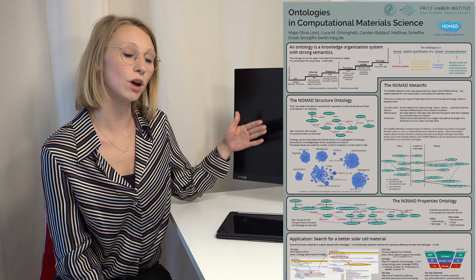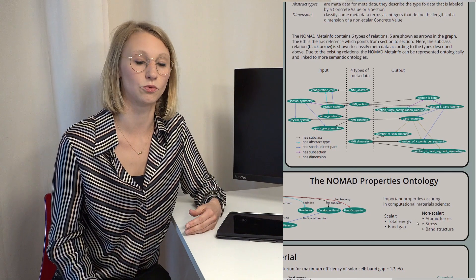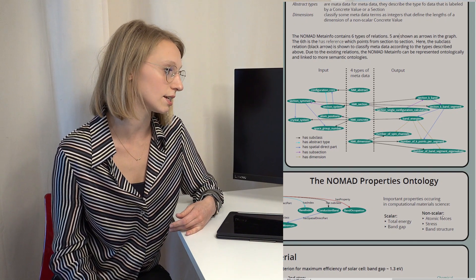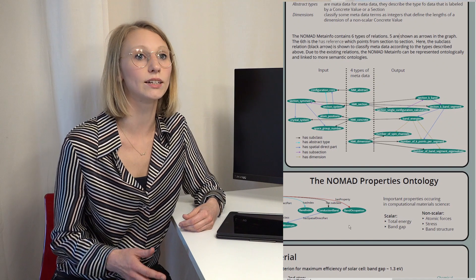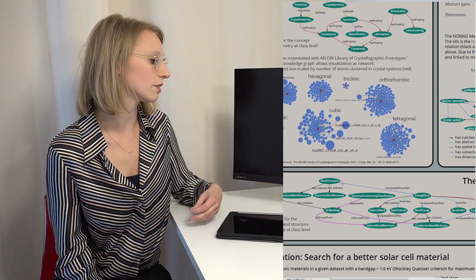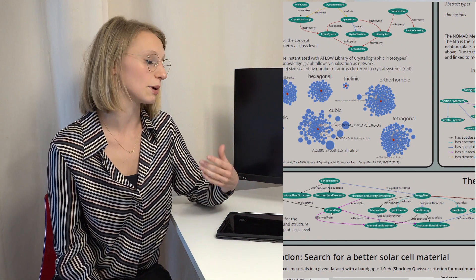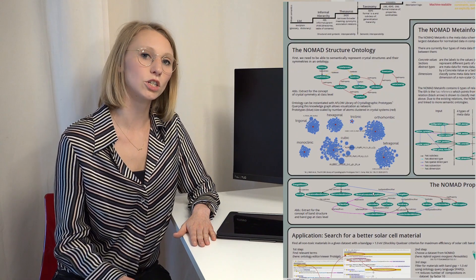What we are actually interested in are the materials properties, so we use the Structure Ontology as a base to connect it with materials properties. There are different types of properties — for example, scalar properties like the total energy of a system, but also non-scalar properties like the stress which is a tensor, and the band structure which is even more complex and is related to a number of different electrical and optical properties. I show you in this graph how the band structure is connected with the band gap and how the band gap is then used as a classification for the electrical conductivity of a material.